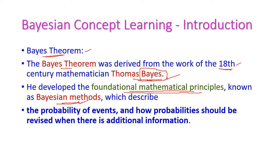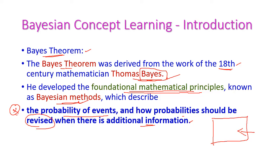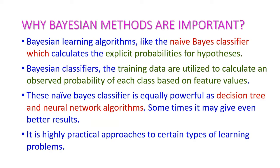The purpose of the Bayesian method is to describe the probability of an event and how the probability should be revised when there is additional information. From the given dataset, we collect the required information based on Bayesian methods. If we want additional information, these probabilities should be revised accordingly. This is called the Bayesian method.